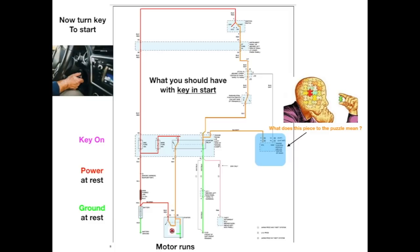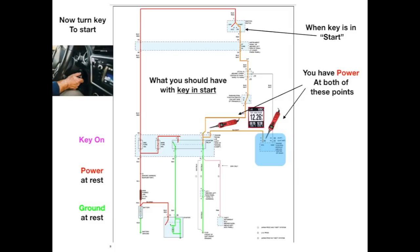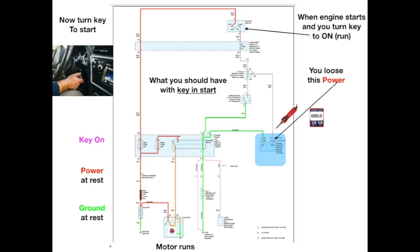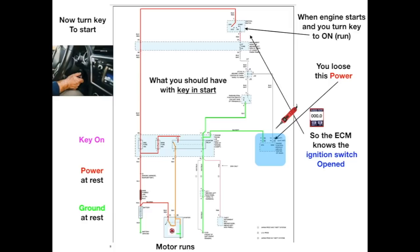What does this piece of the puzzle mean at the ECM? When the key is in the start position, you have power at both of these points, so the ECM knows that the park neutral switch has closed. Also, when the key is in the start position, you have power at this point — following the diagram the power goes right to it — so the ECM, being a logic device, knows that the ignition switch is closed. When the engine starts and you turn the key back to run, you lose this power, so the ECM knows the ignition switch has opened. Keep in mind this presentation was on the starting system, not the ignition system. If your starter engages and cranks over, it's not a starting motor issue — it's an ignition system issue — and you can use these same principles on the diagram for your ignition system.